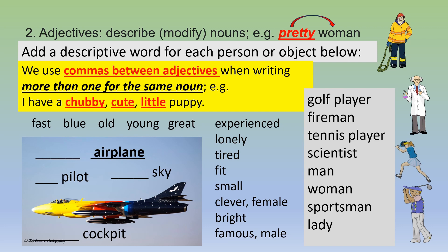Two: adjectives describe or modify nouns. Add a descriptive word for each person or object below. We use commas between adjectives when writing more than one for the same noun. For example: I have a chubby, cute, little puppy. Note: there is no comma between the last adjective and the noun.